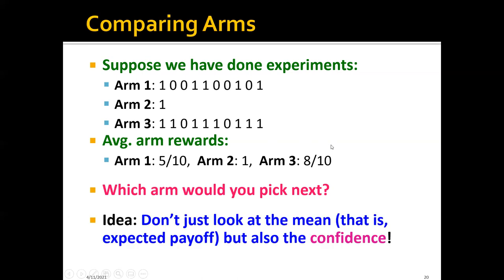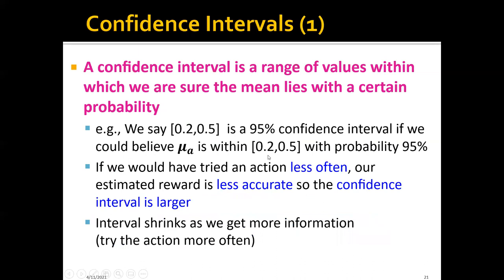The idea is: don't just look at the mean, that is the expected reward or expected payoff, but also look at the confidence of our estimated reward. An important concept related to the new algorithm is the confidence interval, which quantifies how confident we are about our estimated reward. The confidence interval is a range of values within which we are sure the mean will lie with a certain probability.